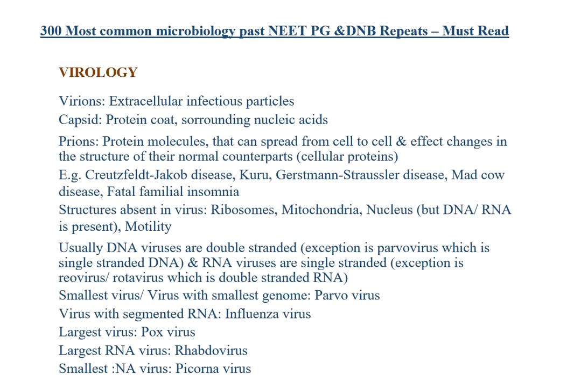Usually DNA viruses are double-stranded; exception is parvovirus, which is a single-stranded DNA virus. RNA viruses are single-stranded; exception is reovirus/rotavirus, which is double-stranded RNA virus. Smallest virus with smallest genome is parvovirus. Virus with segmented RNA is influenza virus. Largest virus is poxvirus. Largest RNA virus is rhabdovirus. Smallest RNA virus is picornavirus.